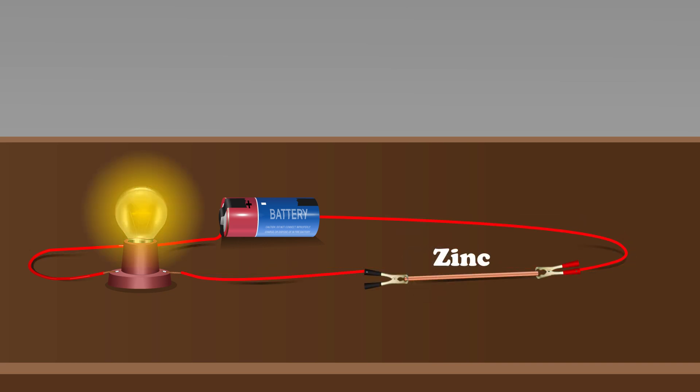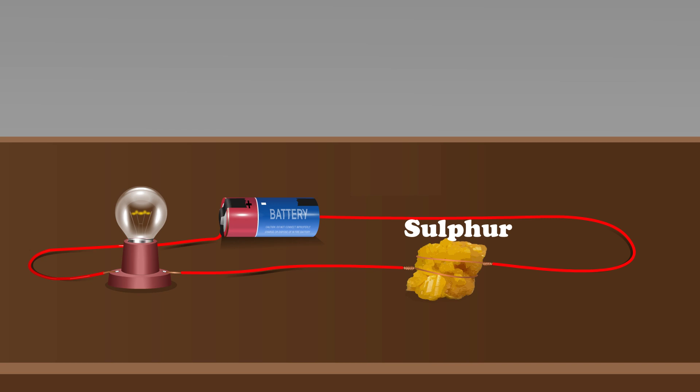The bulb glows when zinc is used. Zinc conducts electricity. The bulb does not glow when a lump of sulphur is used. Sulphur does not conduct electricity.